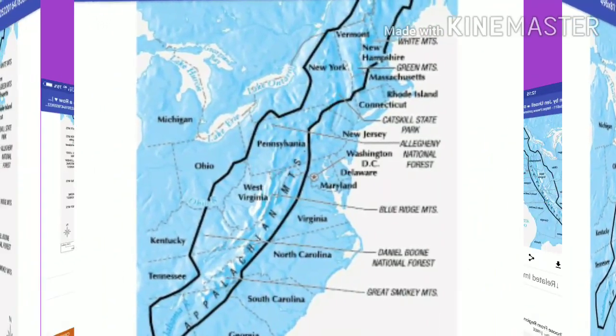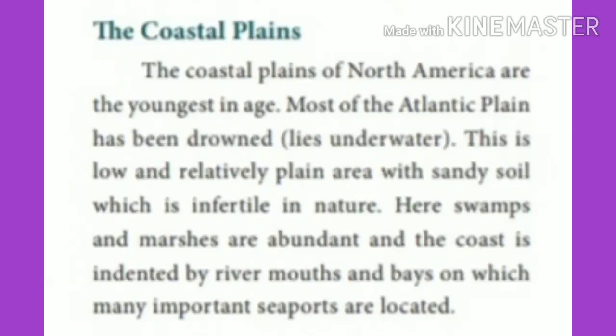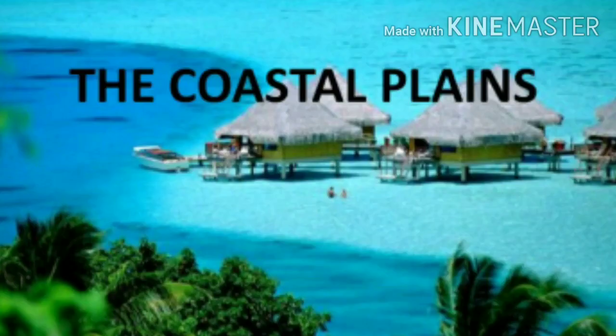Now we are going to see the Coastal Plains. This is the last physiography of North America. The coastal plains of North America are the youngest in age. Most of the Atlantic plain has been drowned — that is, the goal lies under water. This is a low and relatively flat area with sandy soil, which is infertile in nature. Swamps and marshes are abundant, and the coast is indented by river mouths and bays, on which many important seaports are located.